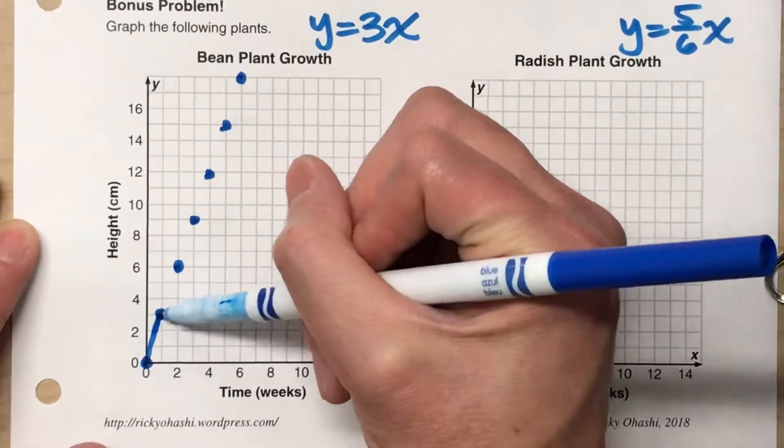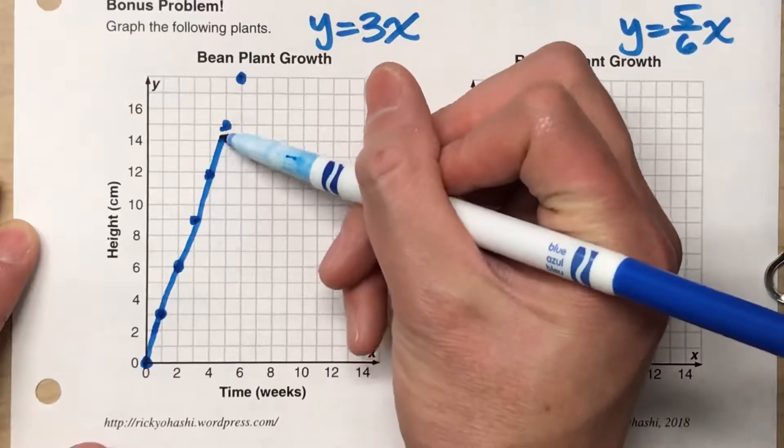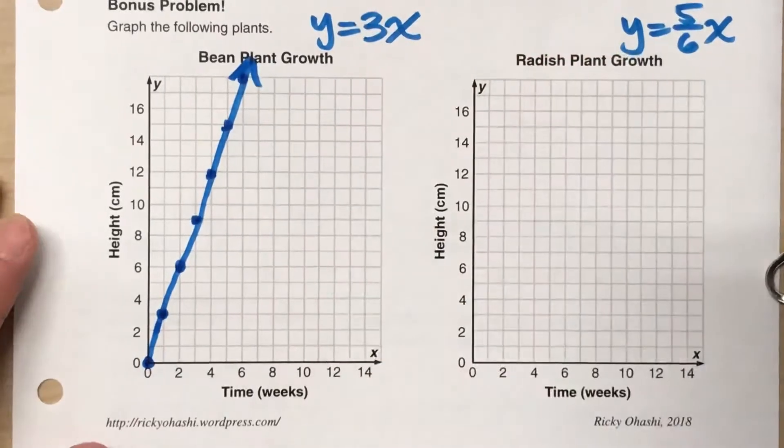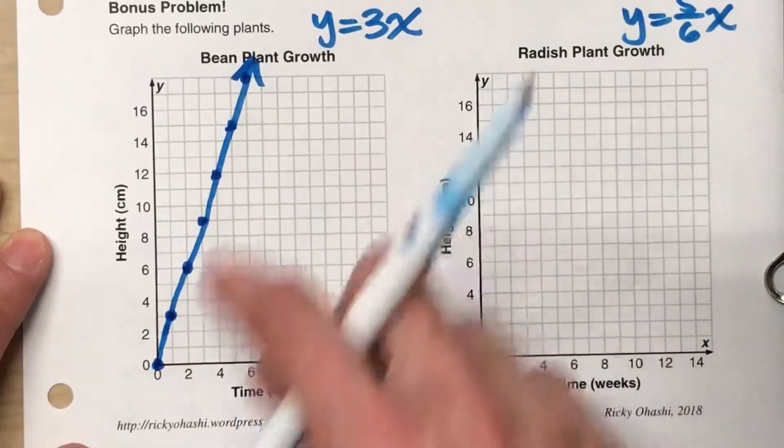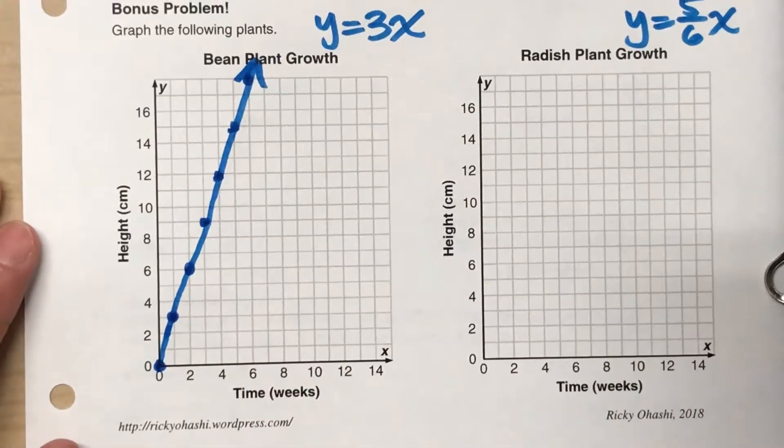So our final graph, once I connect the dots, it's a little wiggly, and I draw an arrow at the end. There's the graph for the bean plant's height.